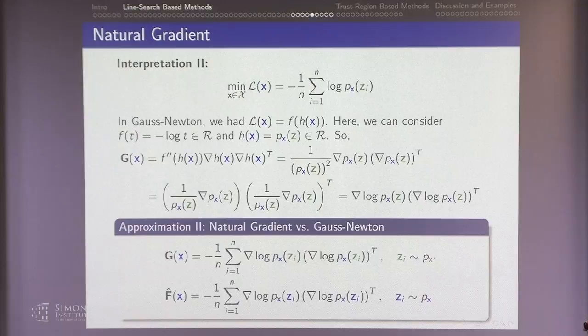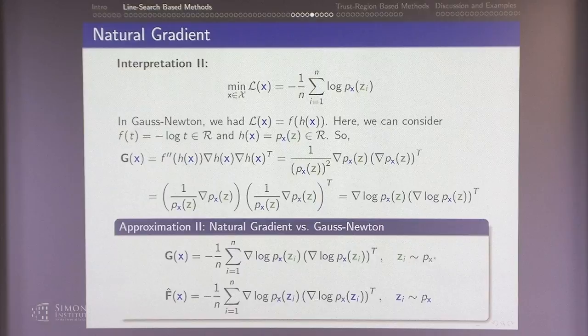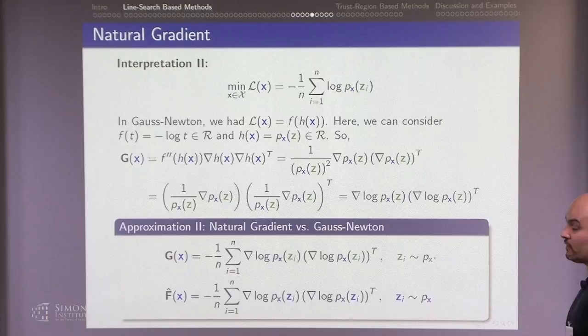In practice, many machine learners say they are doing natural gradient, but what they're actually doing is Gauss-Newton — they're using the training data instead of generating new samples from the current distribution. If you're truly doing natural gradient, at every iteration you have to generate new samples from your current distribution and compute the Fisher information from those.